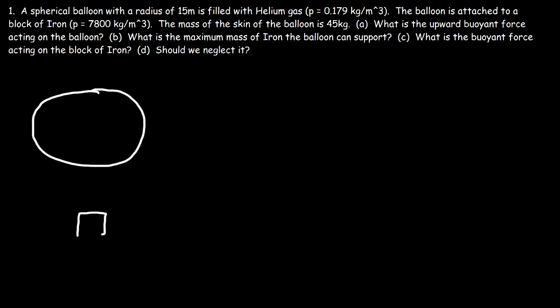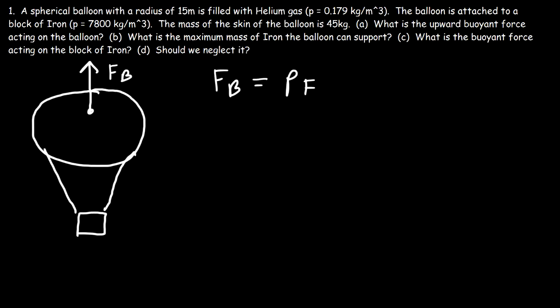Here we have the balloon supported by the upward buoyant force, with the block of iron hanging below it. The upward buoyant force is equal to the density of the surrounding fluid — which is air, since the displaced air molecules push up the balloon — times the volume submerged in that fluid, multiplied by gravitational acceleration.